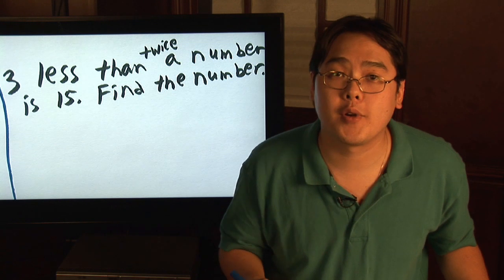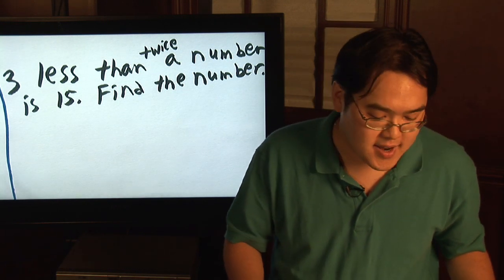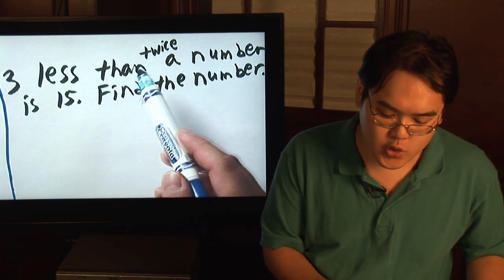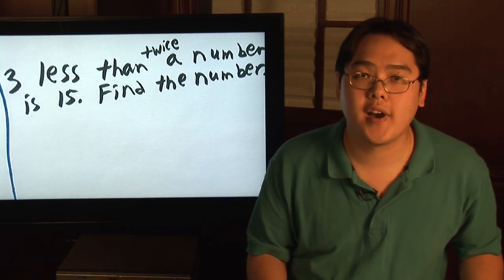Now we're going to do an illustration and I'm going to throw in some clues along the way. Here's an example of a word problem: Three less than twice a number is fifteen. Find the number.